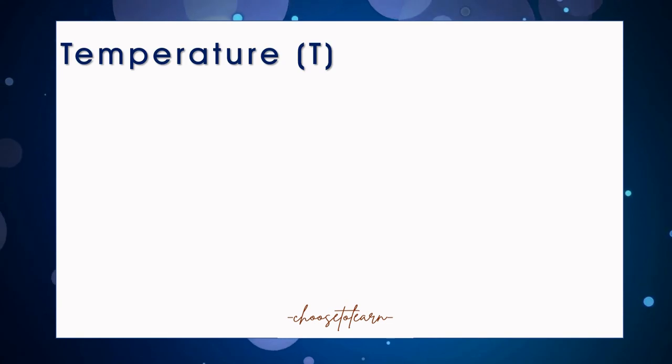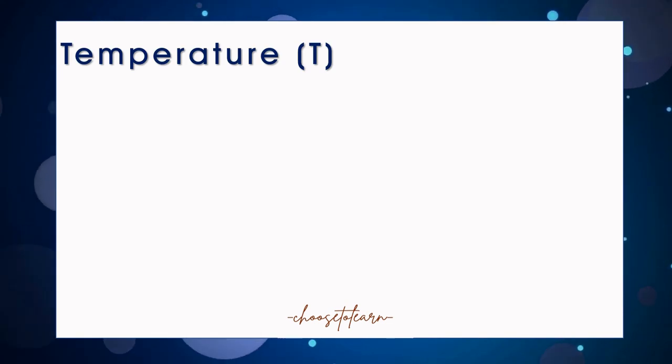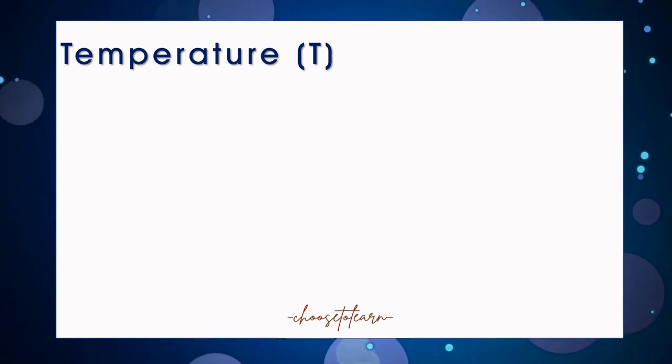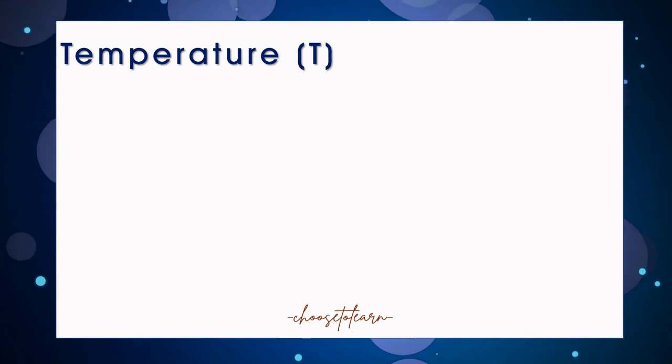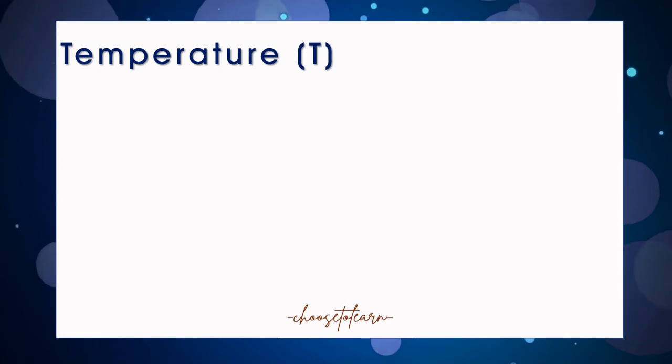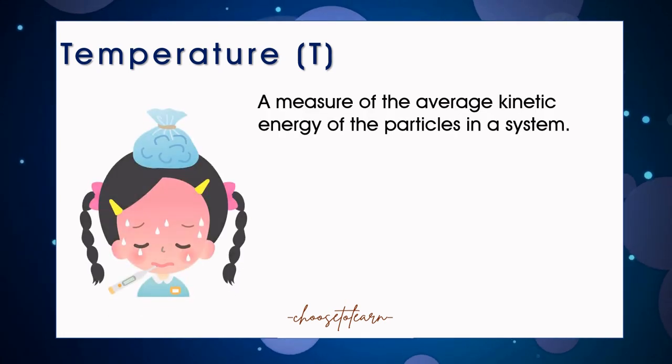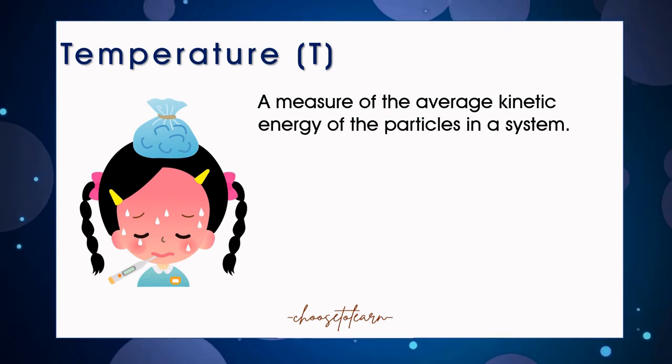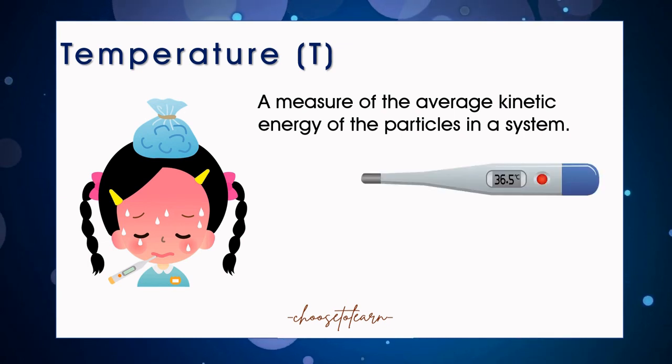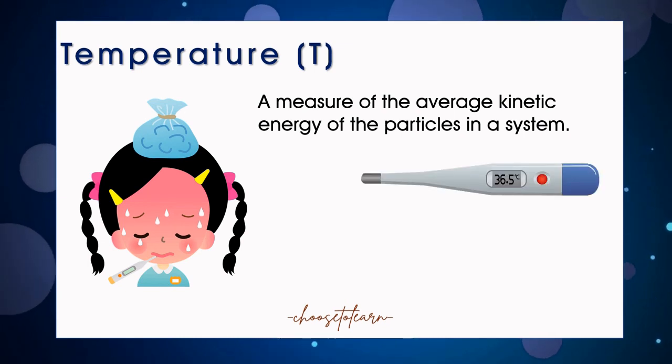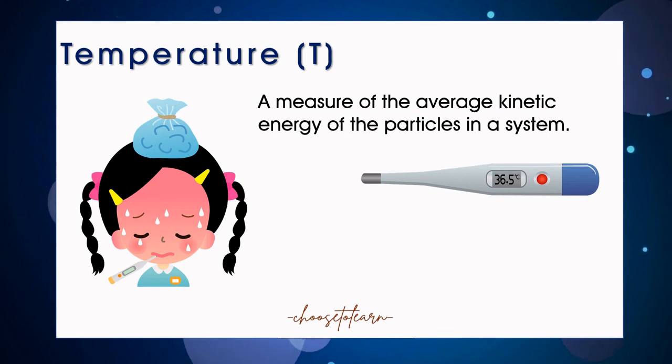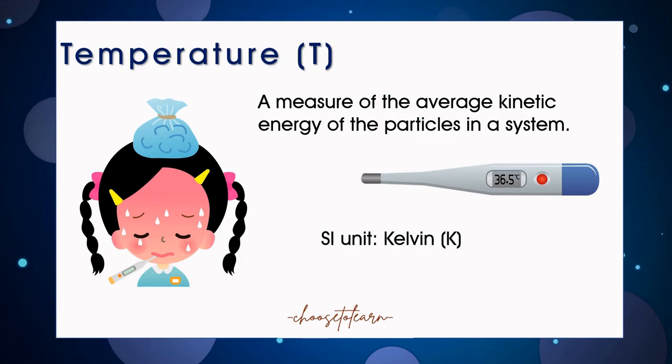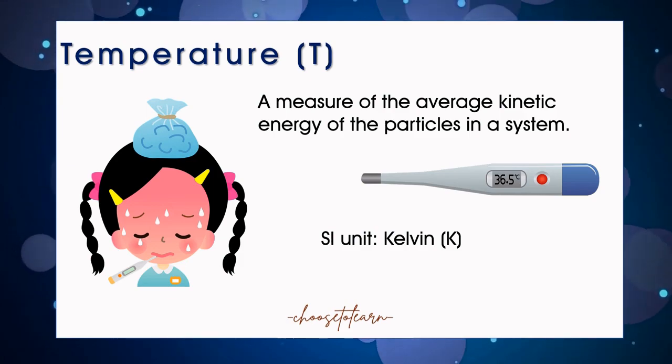Lastly is temperature, with the symbol of capital letter T. It refers to the measure of how hot or cold an object or substance is based on a comparative scale. Scientifically, temperature is the measure of the average kinetic energy of the particles in a system. Thermometer is used to measure temperature directly. The SI unit of temperature is Kelvin. Other units of temperature are Celsius and Fahrenheit.